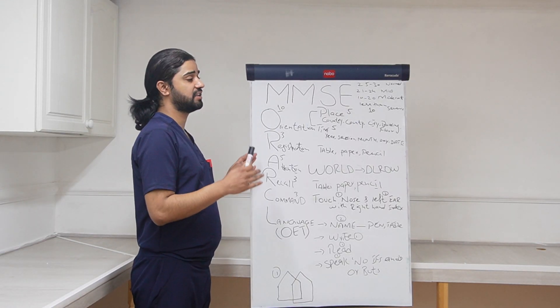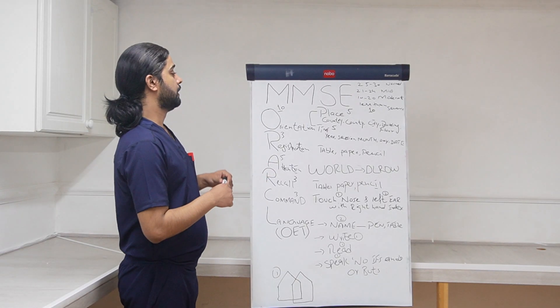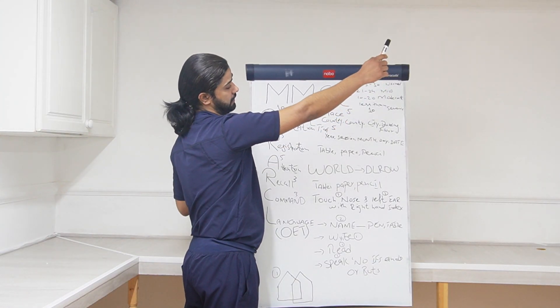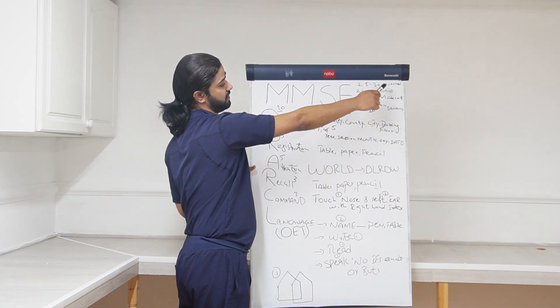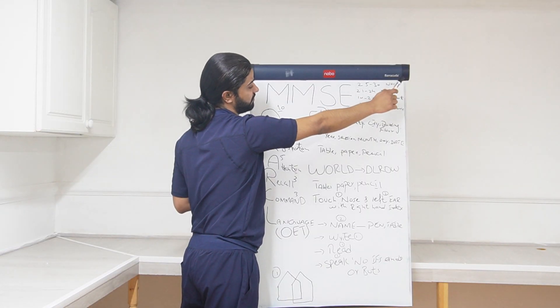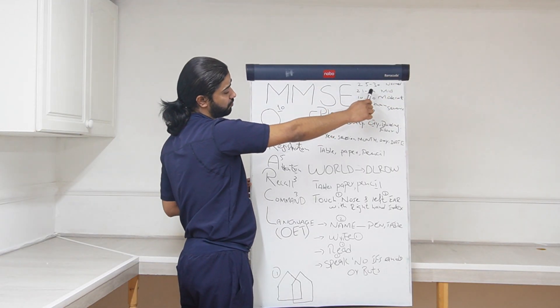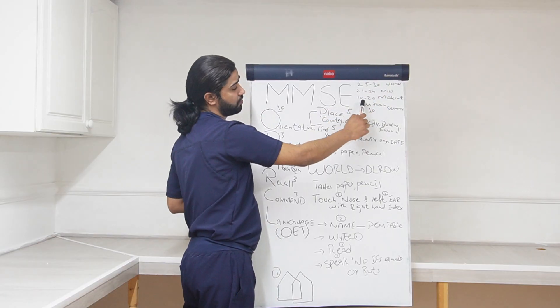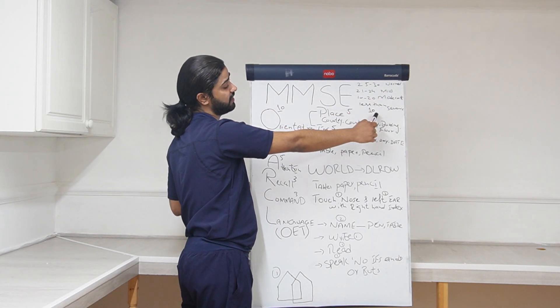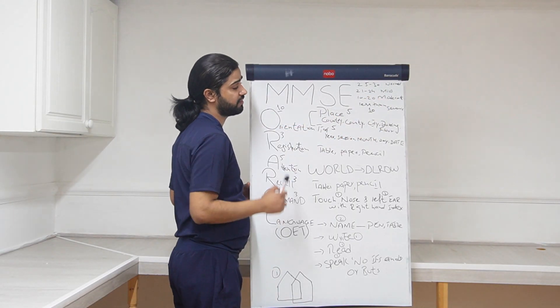This examination has a total score of 30. The normal range is 25 to 30. If somebody has a total score of 25 to 30, it means he is having normal cognitive function. If it is 21 to 24, that is mild. If 10 to 20, that is moderate, and if less than 10, that is severe cognitive impairment.